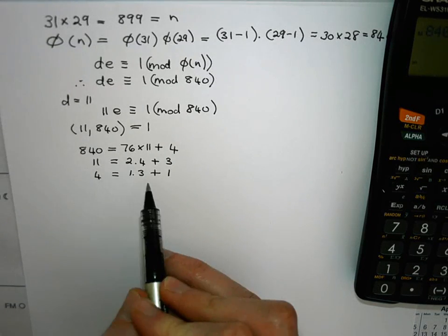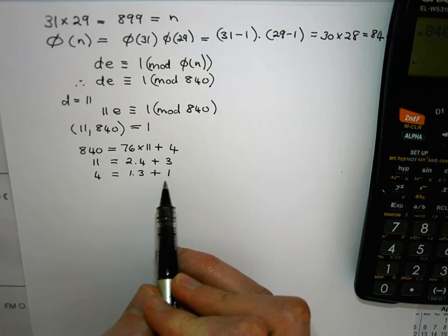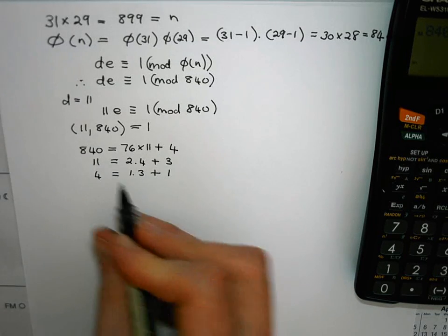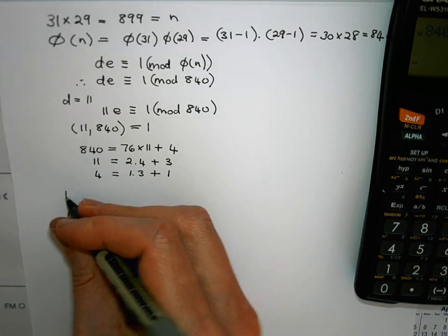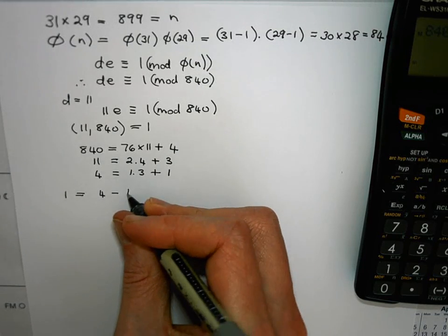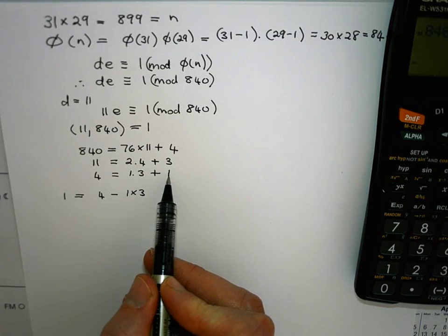So now I want to go back through the execution of Euclid's algorithm to write 1 as a linear combination of 840 and 11. So I start with the last equation. I can write 1 as 4 minus 1 times 3. I simply made 1 the subject of this equation.